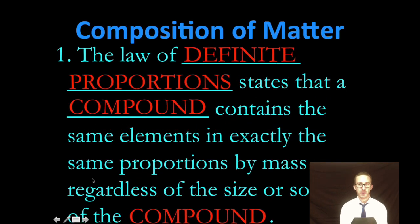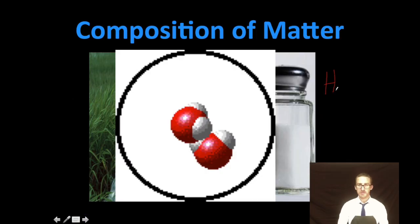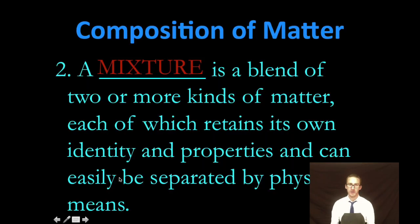Now, the law of definite proportions states that a compound contains the same elements in exactly the same proportions by mass, regardless of the size or source of the compound. So as you think about the formula for water, H2O, it doesn't matter where you get your sample of water from. It's always going to be two hydrogens, in this case these white atoms, to one atom of oxygen or this red one. Law of definite proportions.